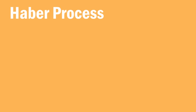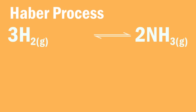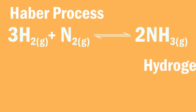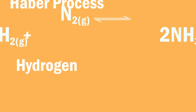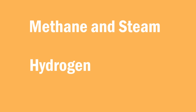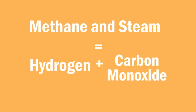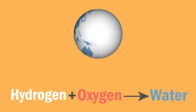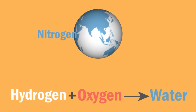The Haber process is the industrial process for the manufacture of ammonia from hydrogen and nitrogen. Hydrogen is obtained from the reaction of methane and steam, producing carbon monoxide as a by-product. The hydrogen produced from this reaction also reacts with oxygen from air, producing water and leaving nitrogen behind.